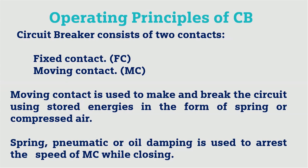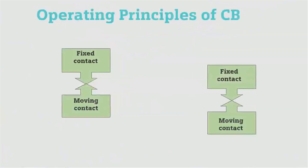The circuit breaker consists of two contacts: fixed contacts and moving contacts. The moving contact is used to make and break the circuit using stored energy in the form of a spring or compressed air. A spring, pneumatic, or oil damping mechanism is used to control the speed of the moving contact while closing.